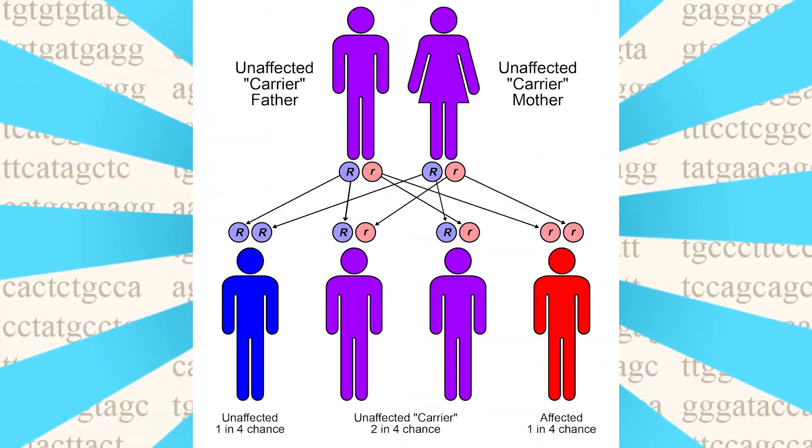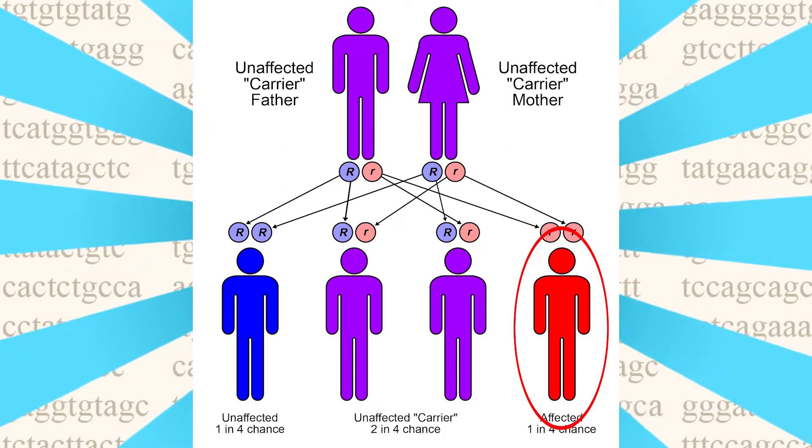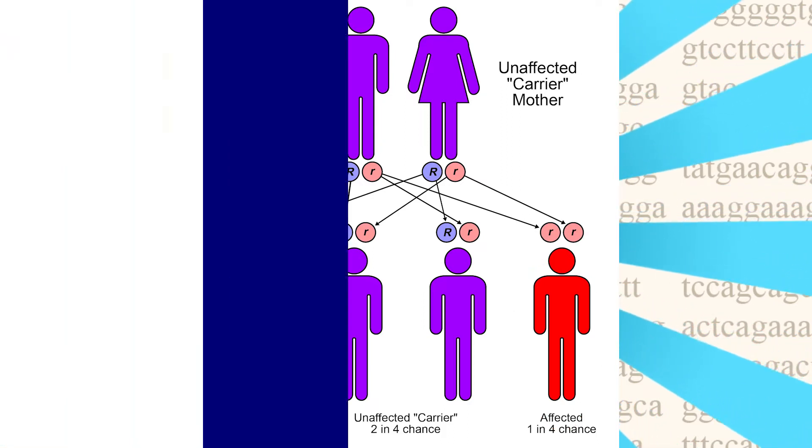However, if two parents carry one mutated form of CFTR respectively, then there is a 25% chance that their child will develop cystic fibrosis. Okay, but how does the disease work?